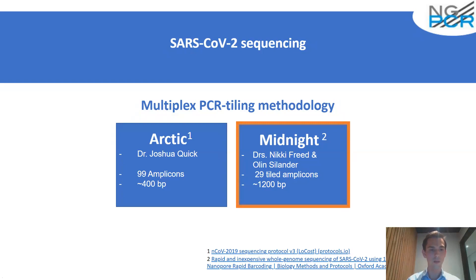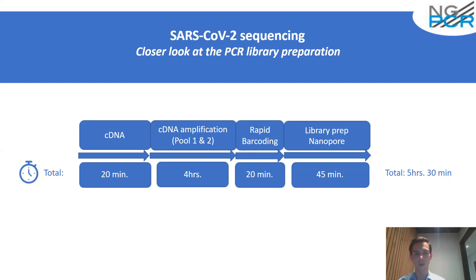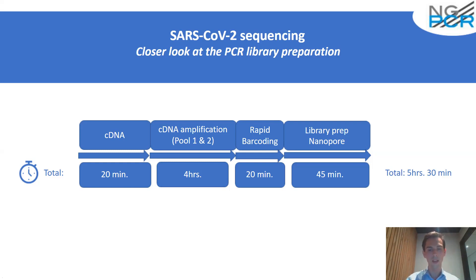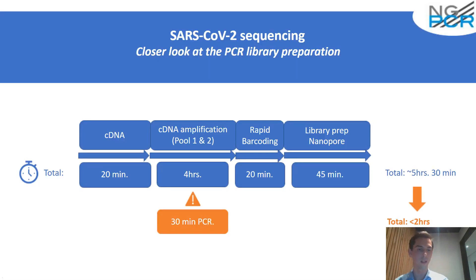If we take a closer look at the Midnight protocol, it is divided into different steps: cDNA synthesis takes around 20 minutes, the amplification step takes four hours, then rapid barcoding, and then library prep for nanopore sequencing. The total library prep from sample to nanopore sequencer takes around five and a half hours, which is quite long, especially if you receive urgent samples midday. Looking at this workflow, we identified the main bottleneck: using our technology, we can decrease PCR time from four hours to less than 30 minutes.